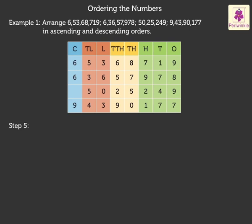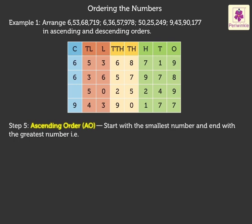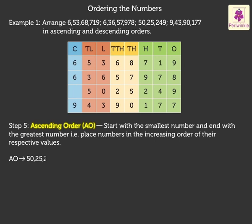Step 5. To write a set of numbers in ascending order, we start with the smallest number and end with the greatest number. That is, we place numbers in the increasing order of their respective values. The ascending order is 50,25,249, 6 crore 36,57,978, 6 crore 53,68,719, 9 crore 43,90,177.